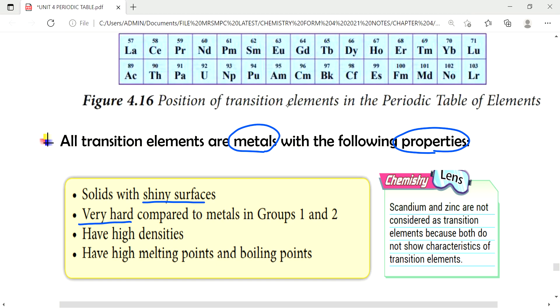For group 1 and 2, we can cut them easily using a knife because they are soft. But transitions metal, they are very hard. They have high densities and high melting point and boiling point because they are metals.